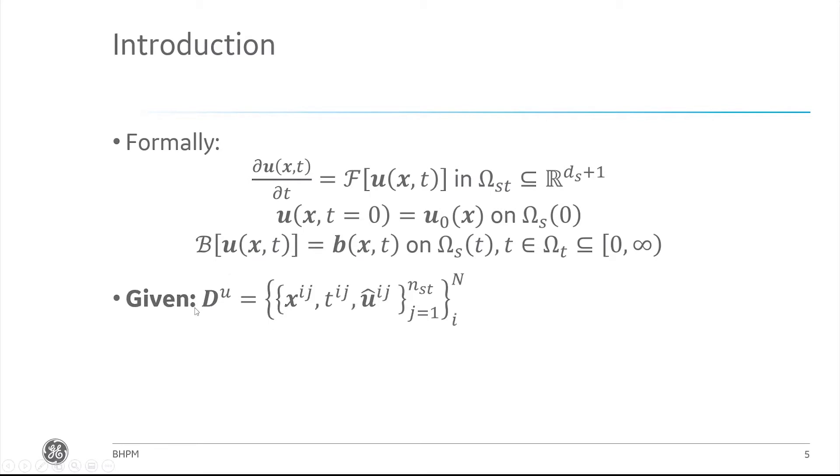In order to help us learn about this, we're given some set of data sets that I'm calling D. It regards these observables U. I have capital N of them, capital N different distinct experiments, presumably corresponding to different parametric settings or different particular solutions with different initial boundary conditions. Each data set is a collection of points in space and time and the corresponding observed values. Given all this, we want to know what F is.